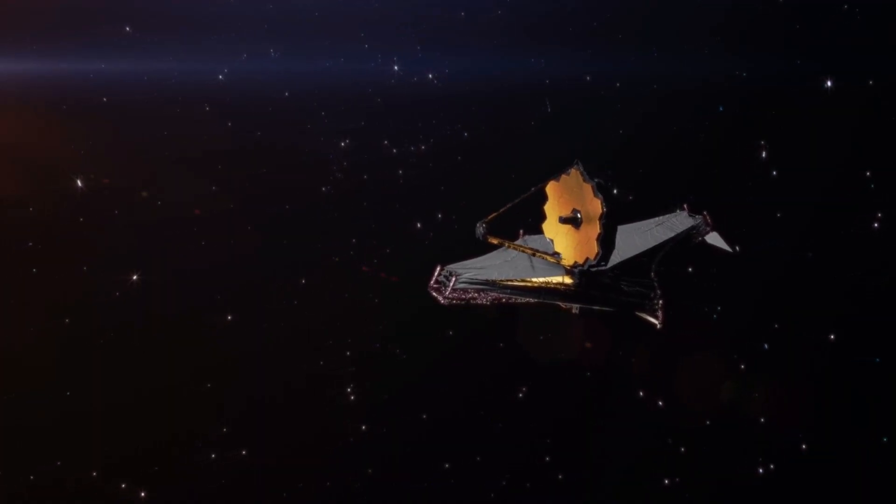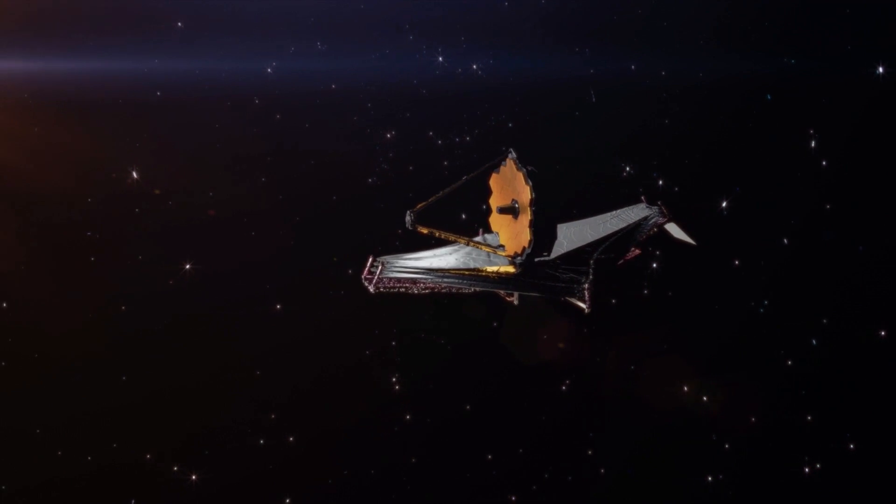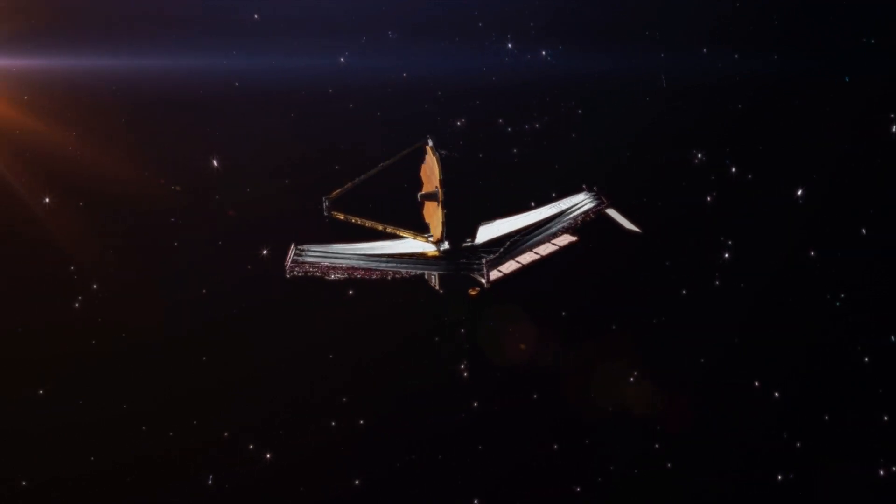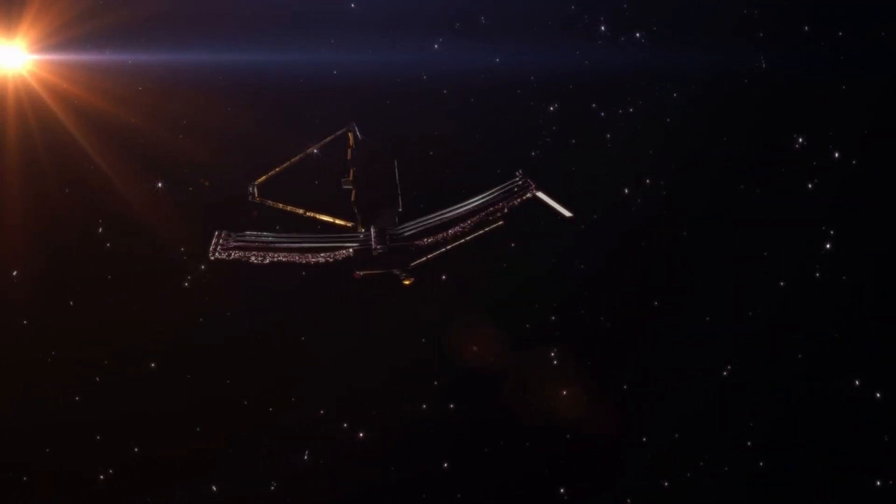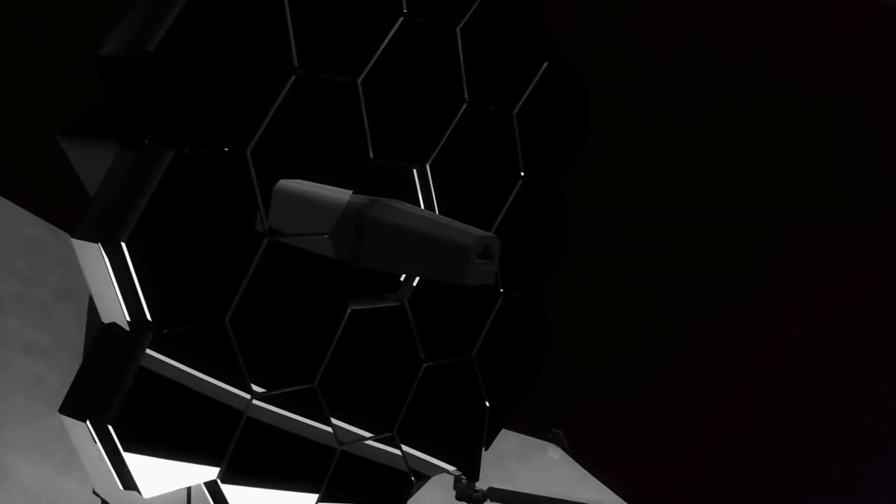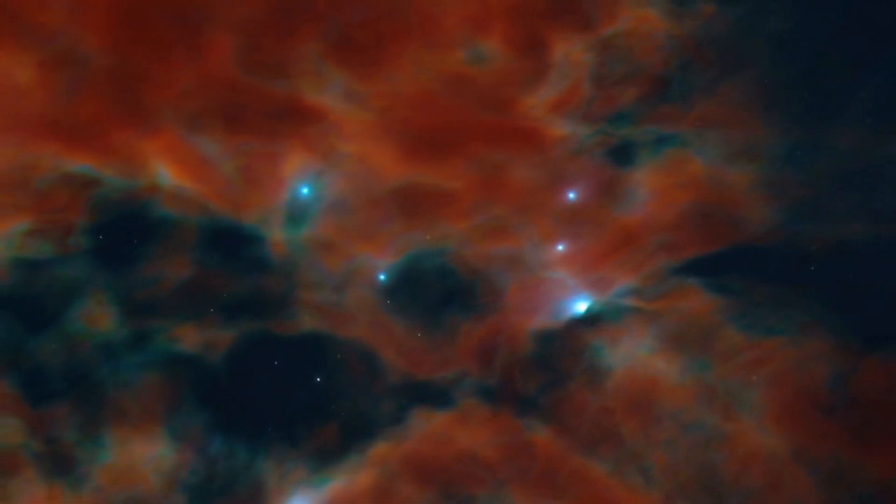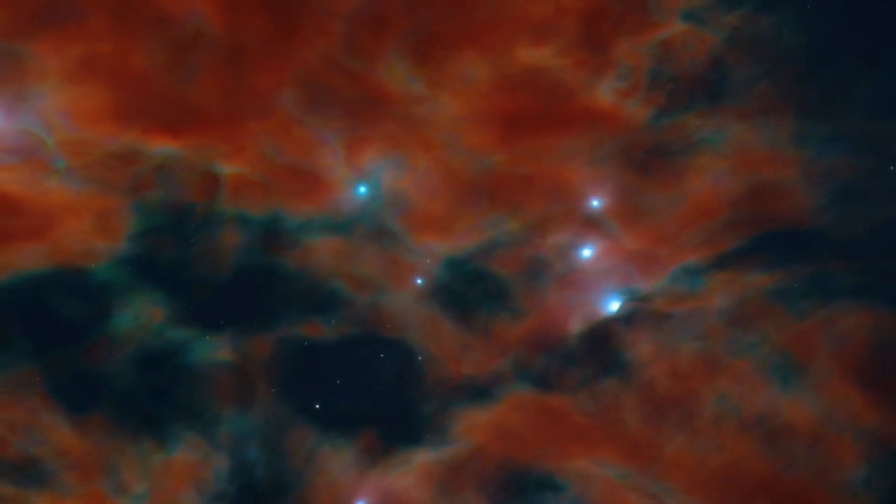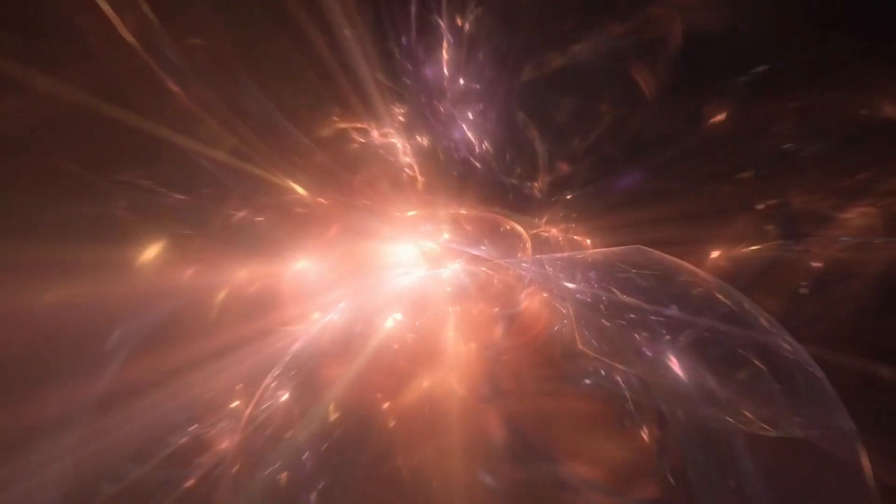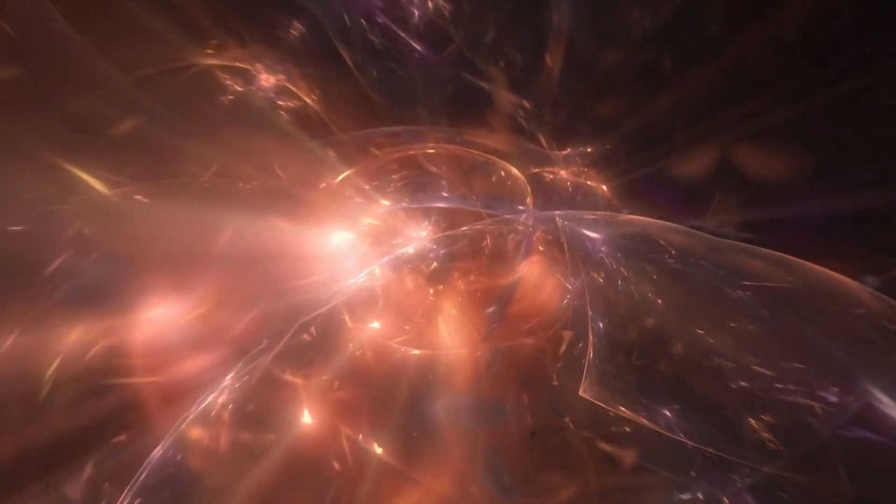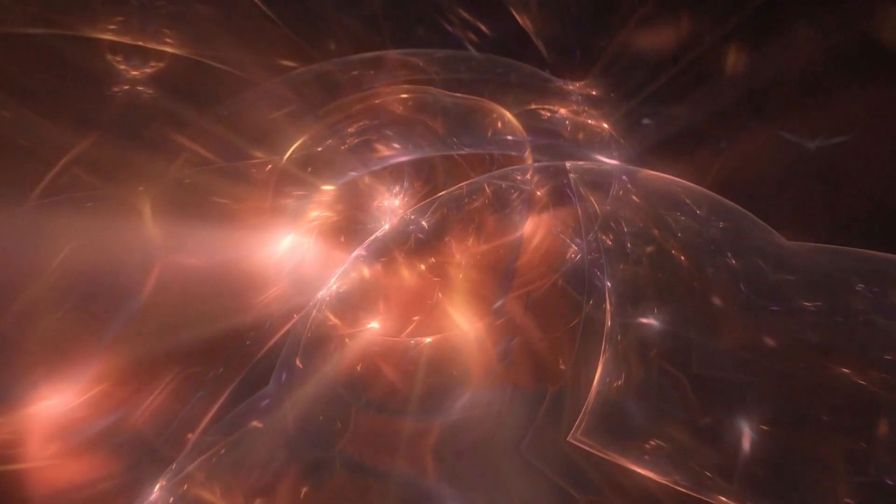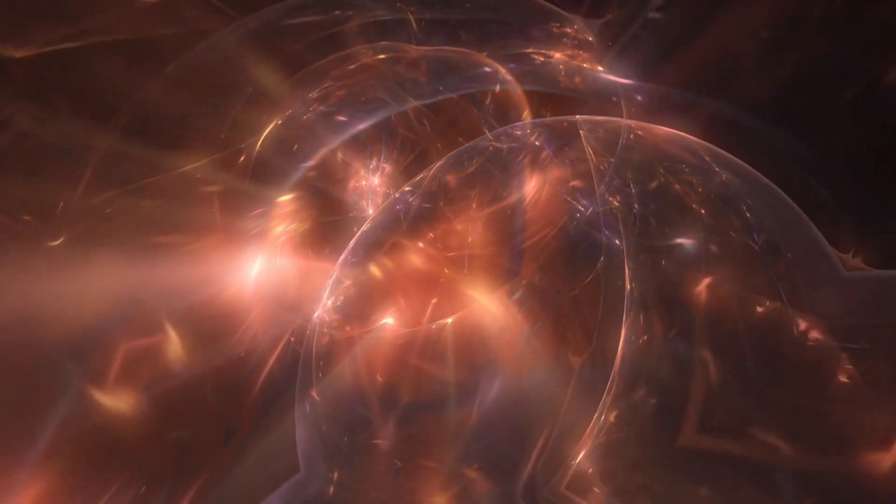JWST has a unique talent. It specializes in peering into the universe through the lens of the infrared spectrum of light. This special power allows it to do something extraordinary. It can peer through cosmic obstacles like dust and gas that cloak things in regular light. This superpower gives the JWST an incredible ability to explore some of the most distant and ancient objects in the universe.